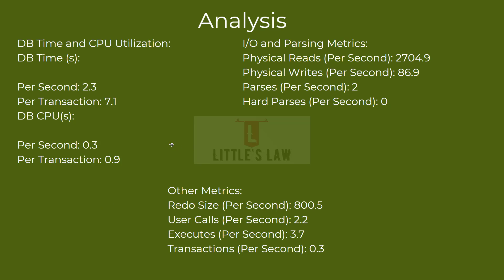Let me give a quick overview of the important metrics. DB time represents the total database time per second — it is the sum of time spent on various activities including CPU time, IO waits, and other waits. Per transaction is the average database time per transaction, providing insights into efficiency for each transaction. Per execution indicates the average database time for each SQL statement execution. Per call represents the average database time for each database call. For DB CPU, per second represents CPU time used by the database per second, similarly broken down per transaction, per execution, and per call.